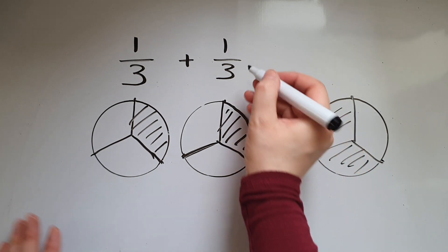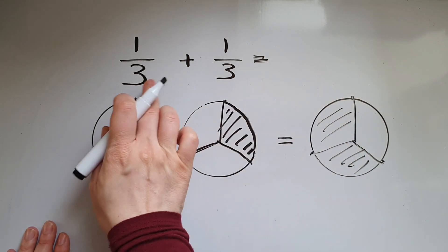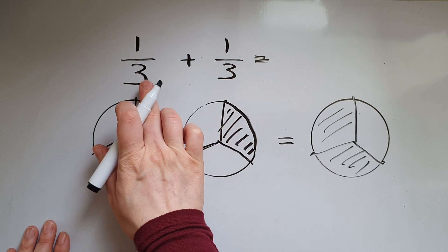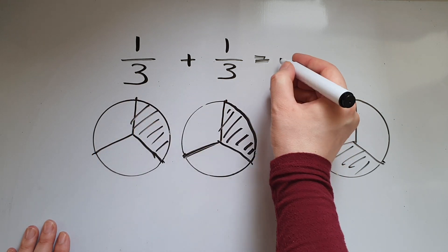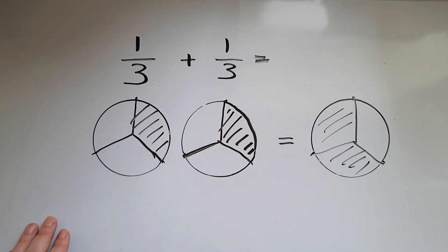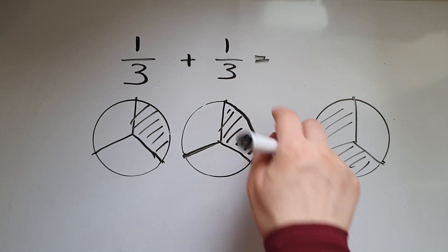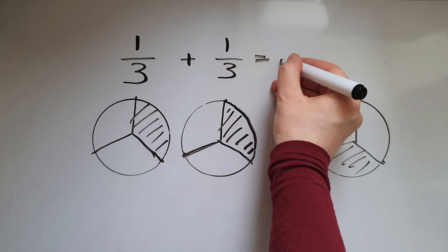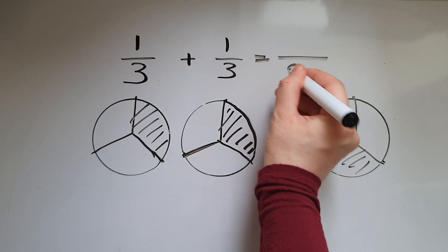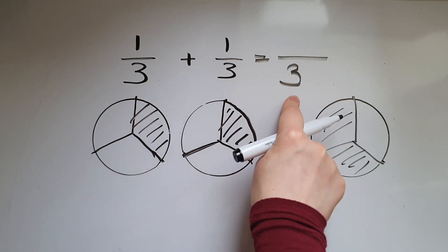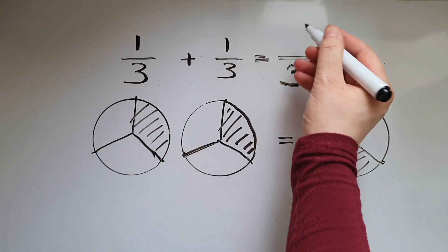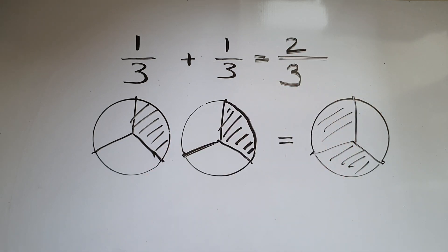It's straightforward when it comes to adding fractions with the same number at the bottom. So we keep the bottom number the same and we add the top numbers. So that is 2/3.